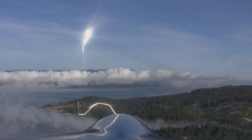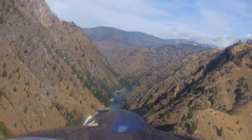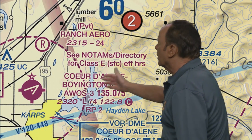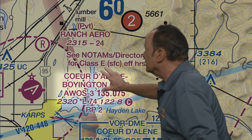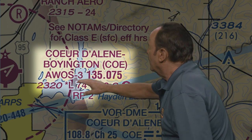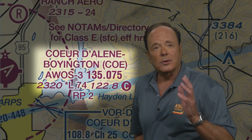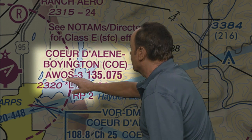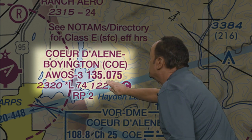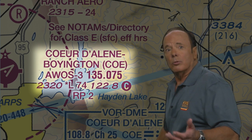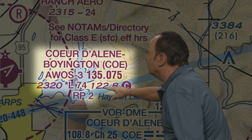This is the beautiful state of Idaho — gorgeous country and fun flying. Here is the airport for Coeur d'Alene, Idaho. Let's take a look at this group of letters and numbers about the airport. The airport is Coeur d'Alene, Boyington Field, and the three-letter identifier is COE. This is handy with the GPS because all you have to do is enter those letters and it will take you right to the airport. We have AWOS 3 — Automated Weather Observing System Type 3 — which observes the weather automatically and reports it to you continuously with a computerized voice. In this case, the frequency is 135.075. In your airplane, your radio will just go to 0.07, so you don't have to worry about the 5, but technically it's there.